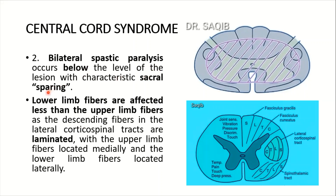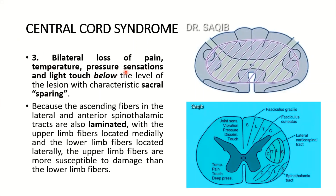This explains the characteristic sacral sparing in the bilateral spastic paralysis. Number three: bilateral loss of pain, temperature, pressure, and light touch below the level of the lesion, also with characteristic sacral sparing. The spinothalamic tracts — both lateral and anterior — are also laminated in the same way: cervical is most medial, then thoracic, lumbar, and sacral is at the periphery. Since central cord syndrome affects the central region first, sacral fibers at the periphery are spared.